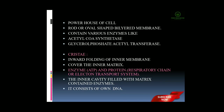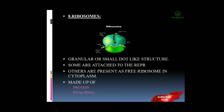Next part of the cytoplasm is ribosomes. Here I have given the structure of ribosomes. Ribosomes are granular, small dot-like structures consisting of one larger subunit and one smaller subunit. Some ribosomes are attached to the surface of the rough endoplasmic reticulum, and some are present as free ribosomes in the cytoplasm. These ribosomes are made up of protein and RNA, with the RNA present maximally in the form of rRNA.